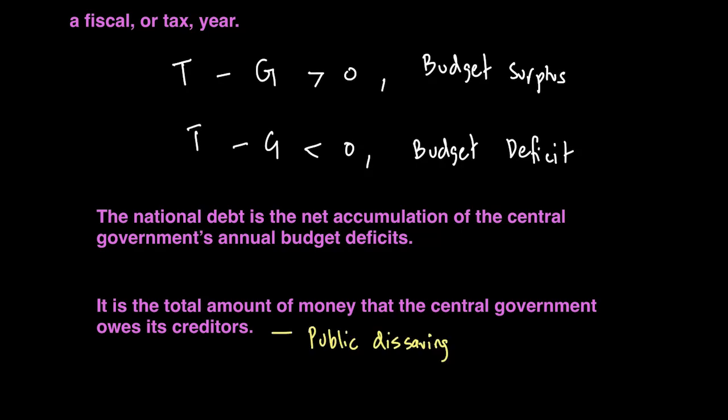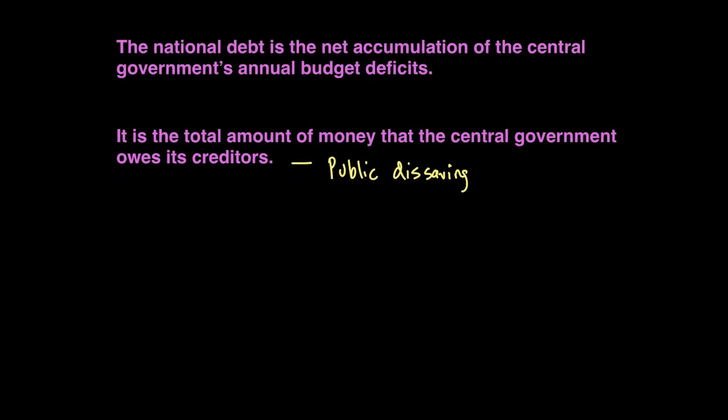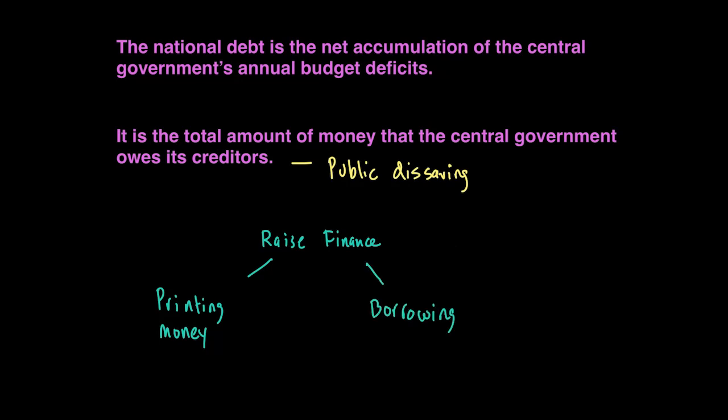When we look at this budget deficit, the government may need to raise extra finance. It can raise finance either by printing more money or by borrowing. We know from our discussion about inflation that printing money will reduce the purchasing power of your currency and can also lead to inflation in an economy, which has its own downside.